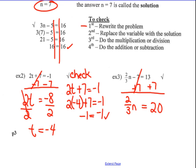Two-thirds of what number equals 20? The opposite of multiplying by two-thirds is to divide by two-thirds. But dividing by a fraction is the same math as multiplying by the multiplicative inverse, three-halves. So I'm going to multiply both sides by three-halves. My 3s cross cancel, my 2s cross cancel, and my multiplication cancels to 1n. I have n on the left side and 20 times three-halves. My 2 goes into 20 ten times — 10 times 3 is 30. So the answer is n equals 30.